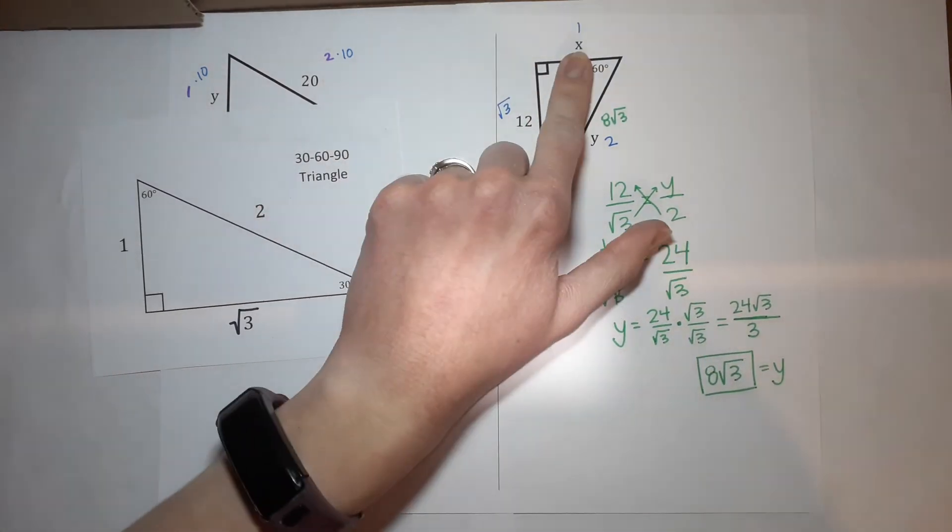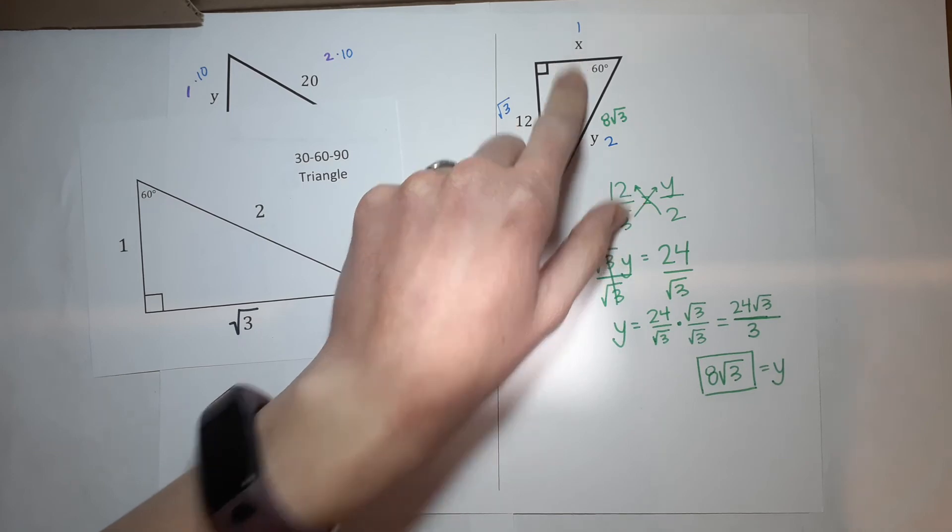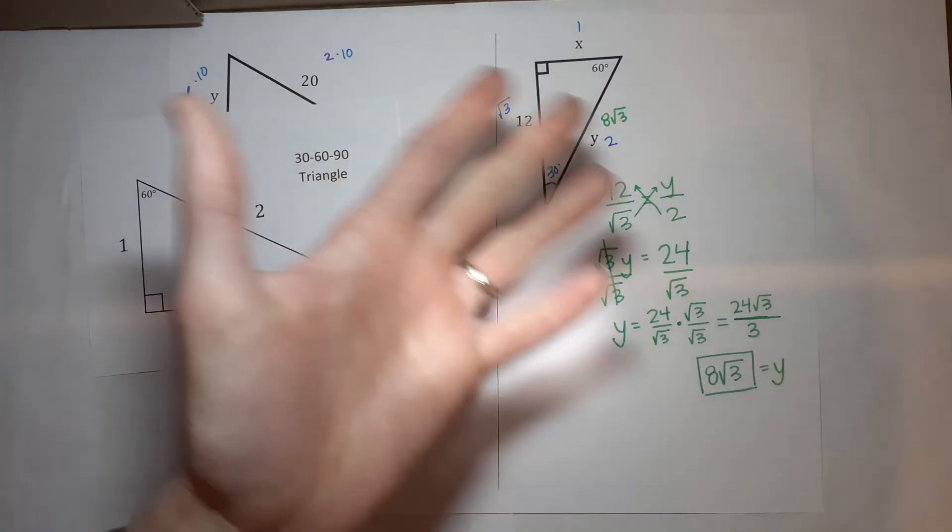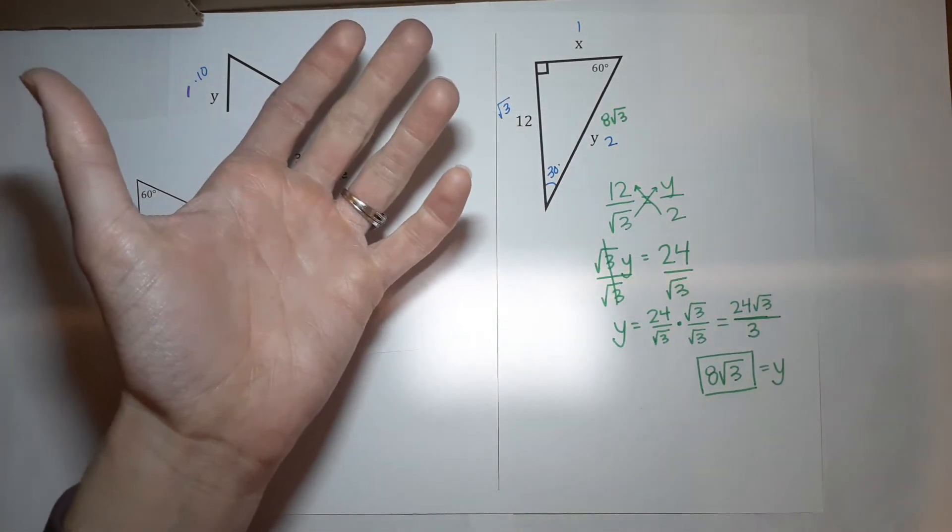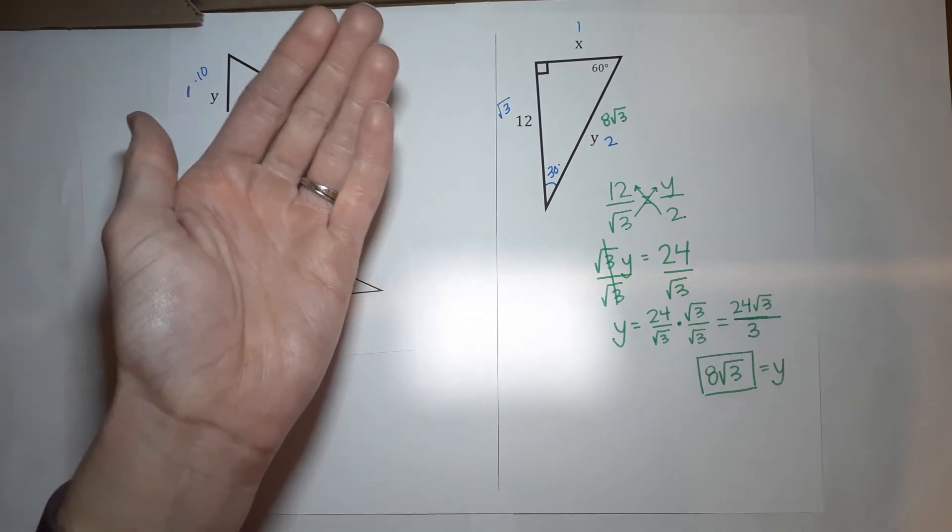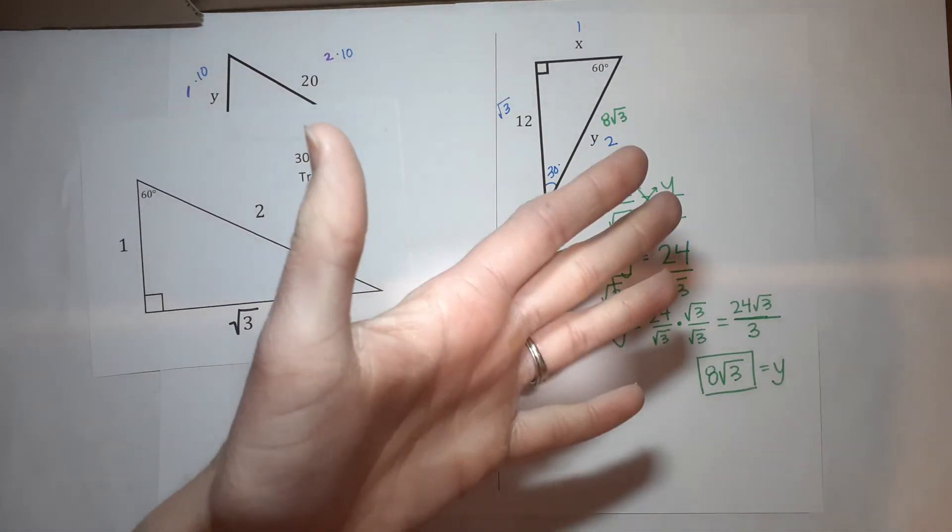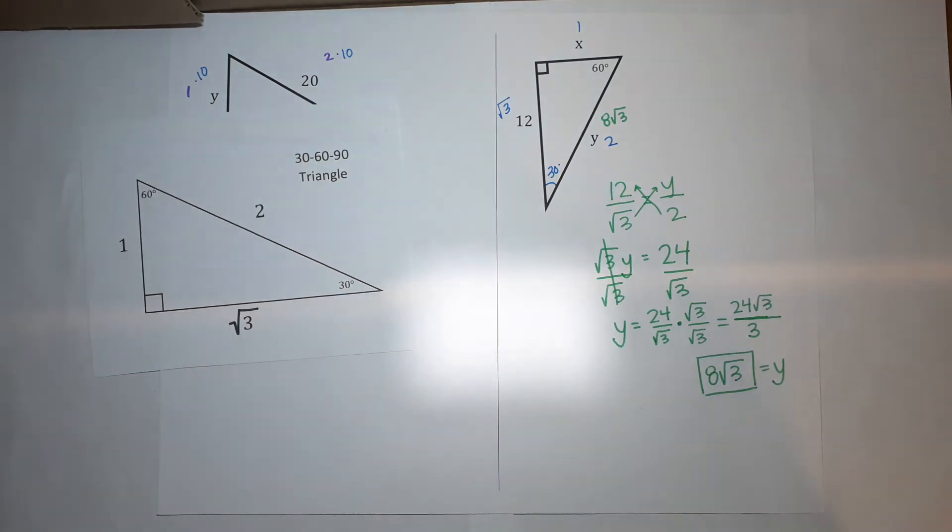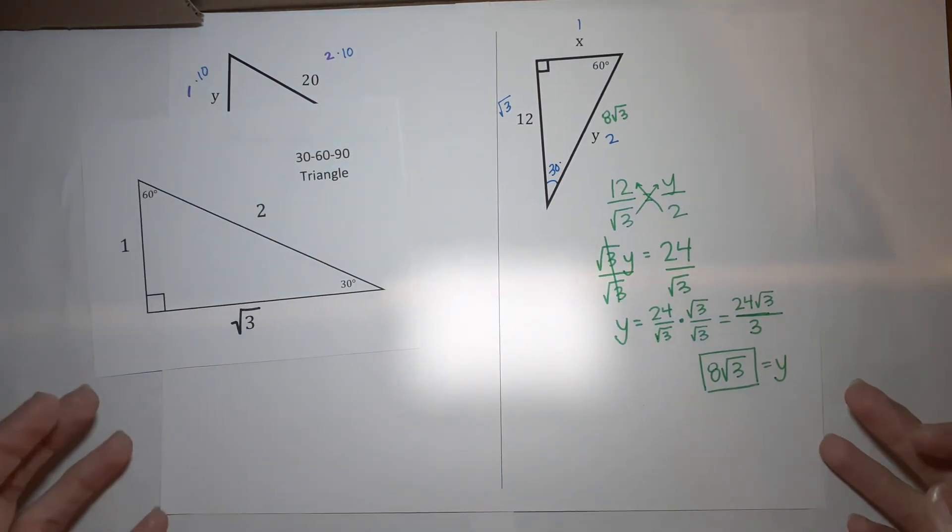Now I just need to find X. You could use the Pythagorean theorem now if you wanted to, if you're like, that's my favorite thing that I want to do. Or we can do proportions again. Because it's a 30, 60, 90 video, we're going to do the proportions.